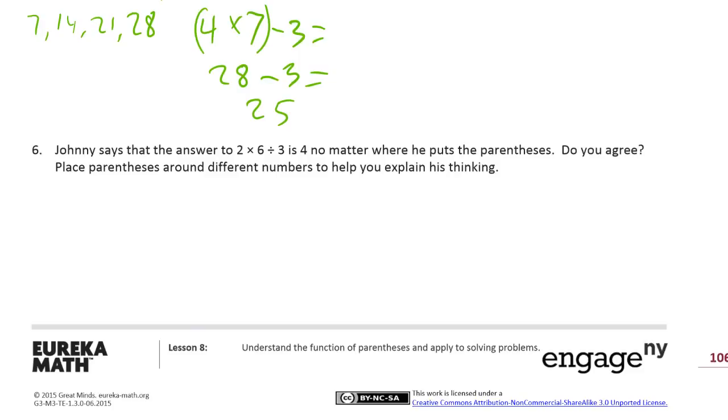Number 6, Johnny says that the answer to 2 times 6 divided by 3 is 4, no matter where he puts the parentheses. Do you agree? He puts the parentheses around different numbers to help you explain his thinking. Okay, so let's try it. 2 times 6 divided by 3. Let's try there. Then we have 2 6's, which is 12 divided by 3, and 12 divided by 3 equals 4. So if we try 2 times 6 divided by 3, and we do this, let's see if it equals 4.